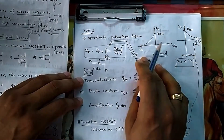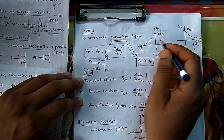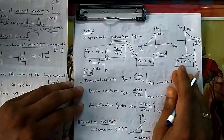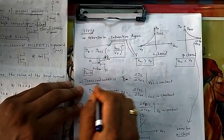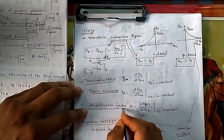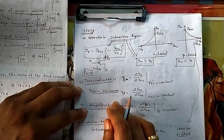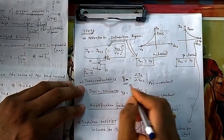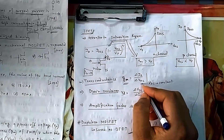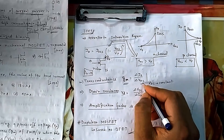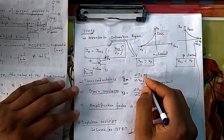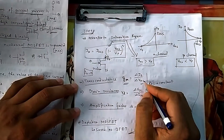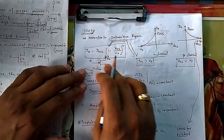This formula is for N-channel; the P-channel is just the reverse. Common terms across JFET and MOSFET include transconductance, which means: for the voltage V_GS you are giving, how much current you are getting — that is your transconductance.